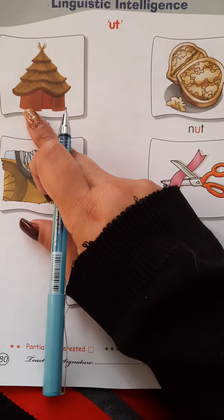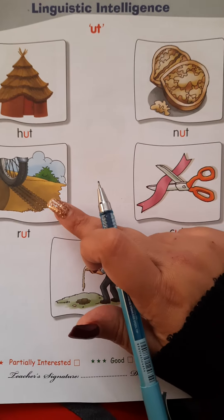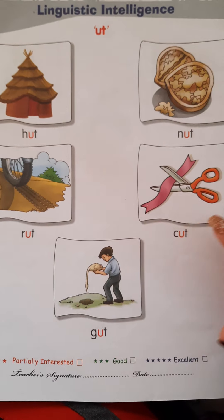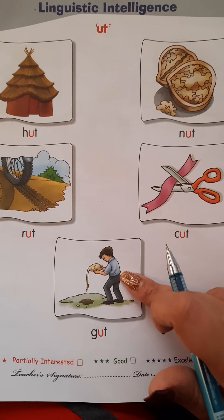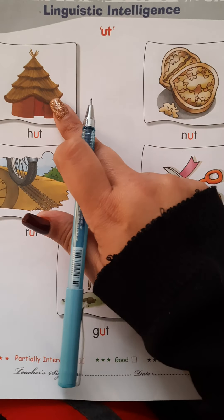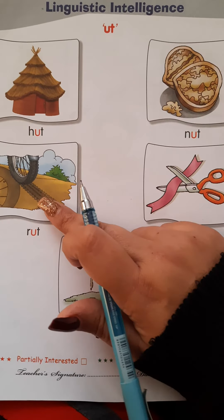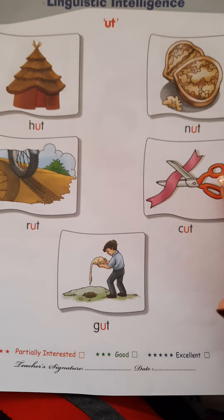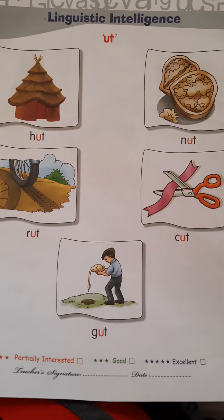Turn your page. UT sound words: hut, nut, rut, cut, gut. Hut, nut, rut, cut, gut.